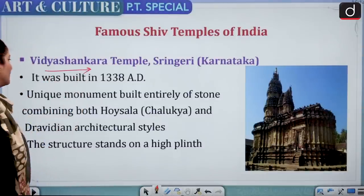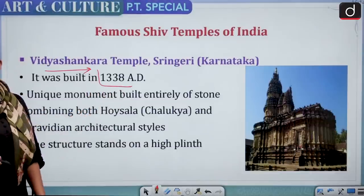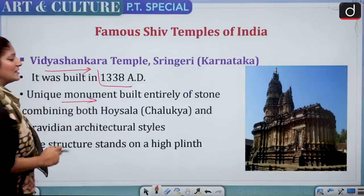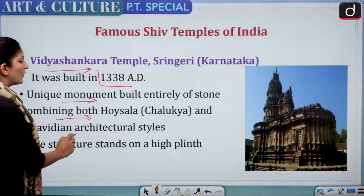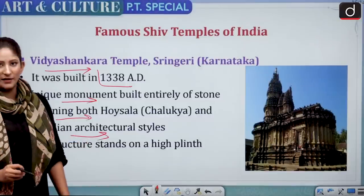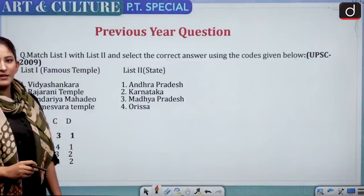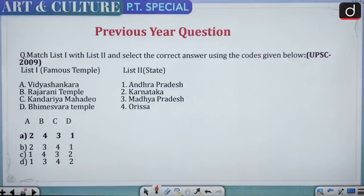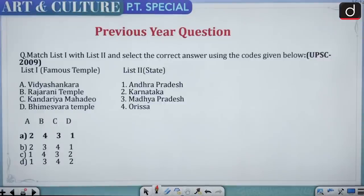Vidya Shankara Temple of Shri Shringeri in Karnataka was built in 1338 AD. It is a unique monument built entirely of stone, combining both Hoysala-Chalukya and Dravidian architectural styles. The structure stands on a high plinth. A previous UPSC 2009 question asked to match famous temples with their states: Vidya Shankara — Karnataka; Rajarani Temple — Odisha; Kandariya Mahadeva — Madhya Pradesh; Bhimeshwara Temple — Andhra Pradesh.